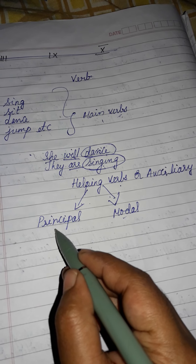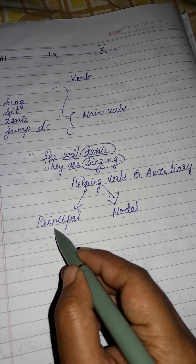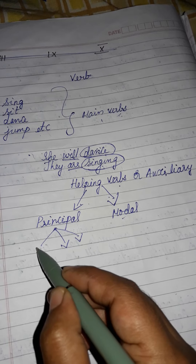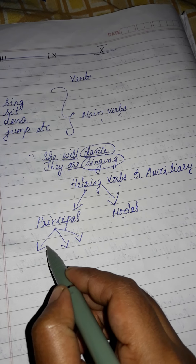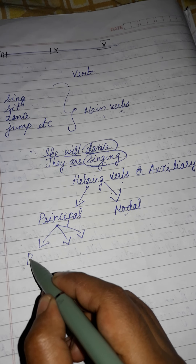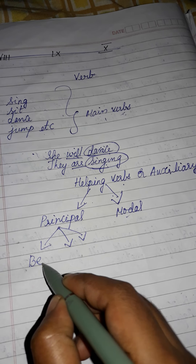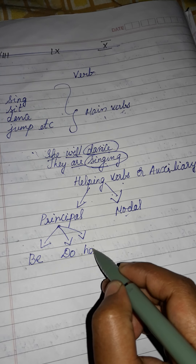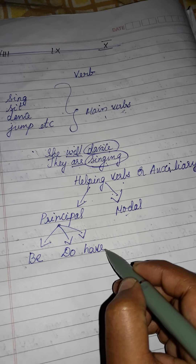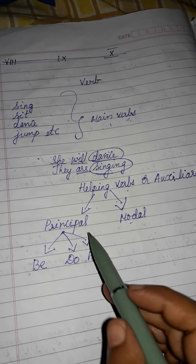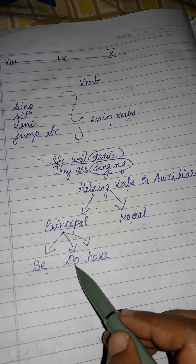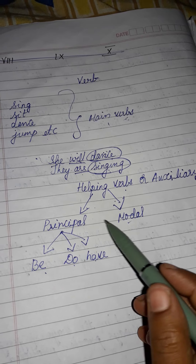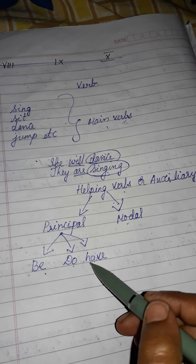Principal auxiliaries — we have three. They are be verbs, do verbs, and have verbs. I will tell about this in detail afterwards.